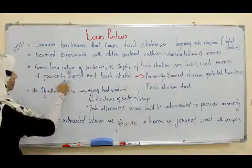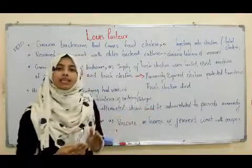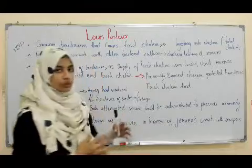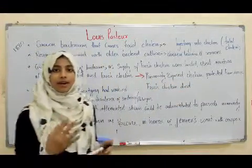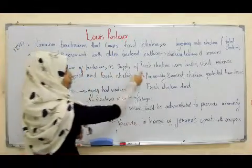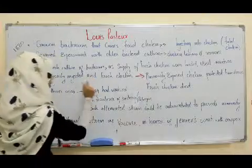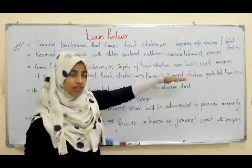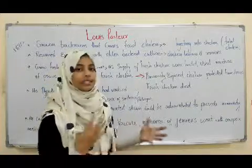Then they grew a fresh culture of the same bacteria, planning to inject it into fresh chickens. But unfortunately, the supply of fresh chickens was limited, so they used a mixture of previously exposed chickens and fresh chickens. What happened? The previously exposed chickens were protected from the disease, but all the fresh chickens died.